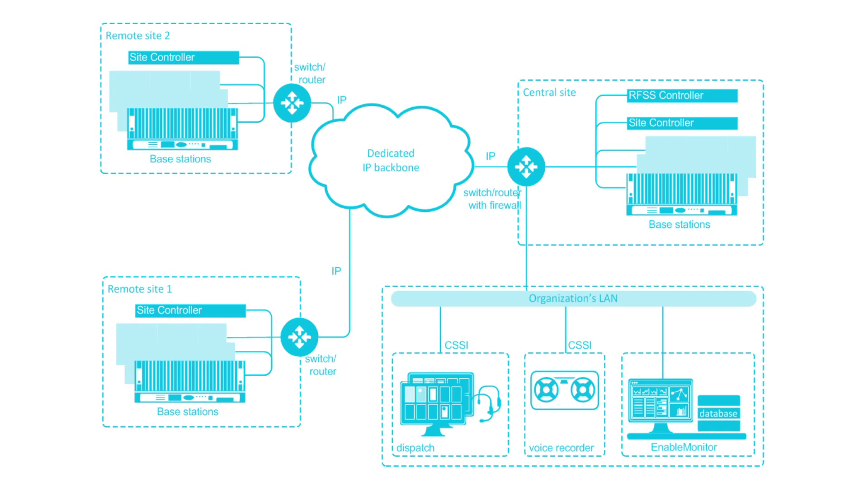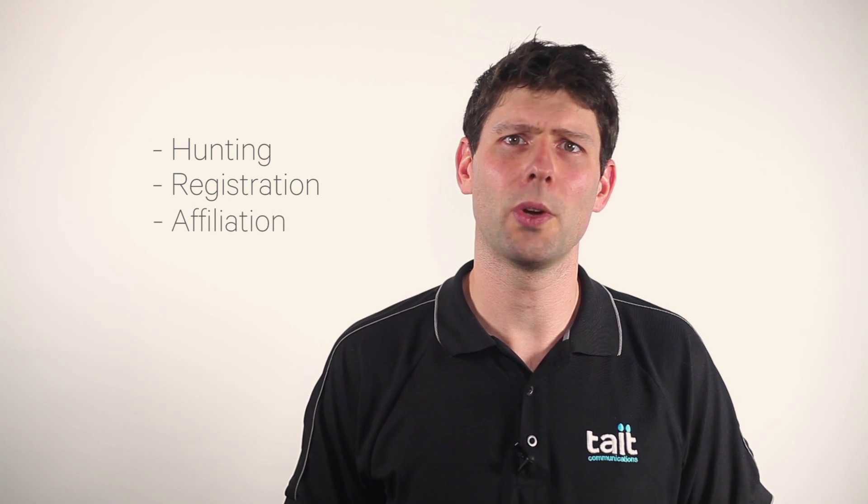On a trunk system there are a number of additional steps. First there is hunting and registration, which happens when the radio is first turned on. The radio is turned on and automatically identifies the closest site and requests permission to use the network. Next is affiliation, where the radio automatically requests permission to use a particular group. All of this takes place on a dedicated channel called the control channel. Once the radio is registered and affiliated, it will indicate that it has service and can be used to make calls.